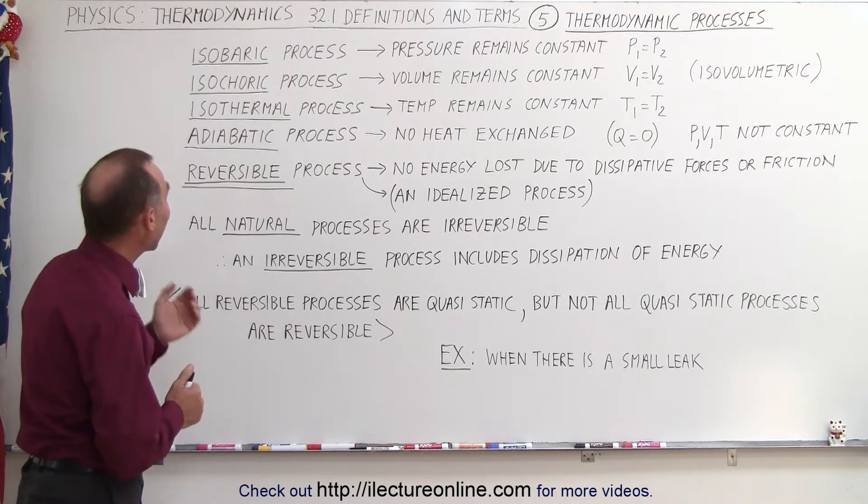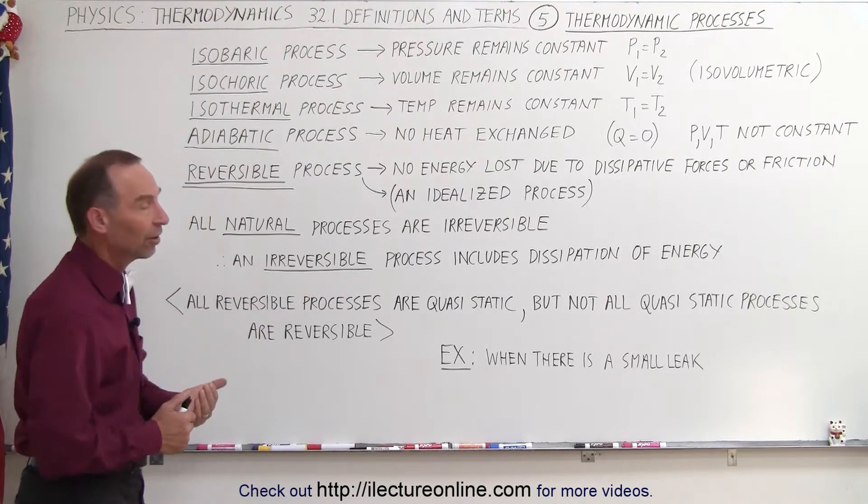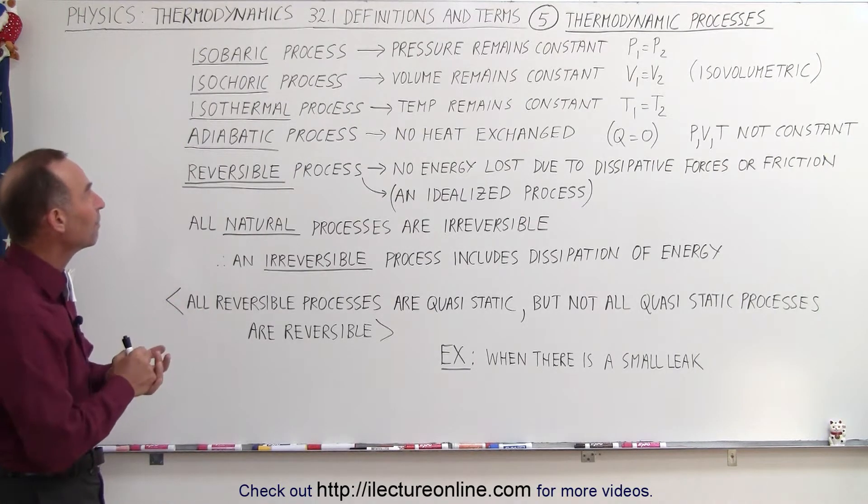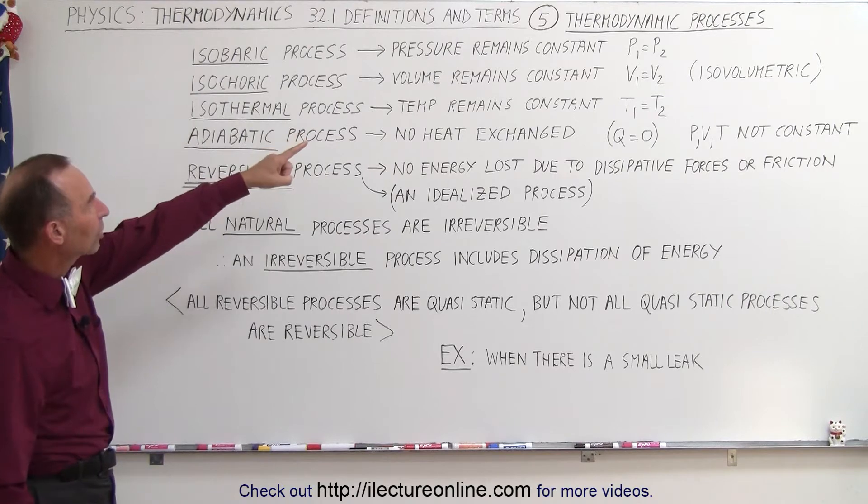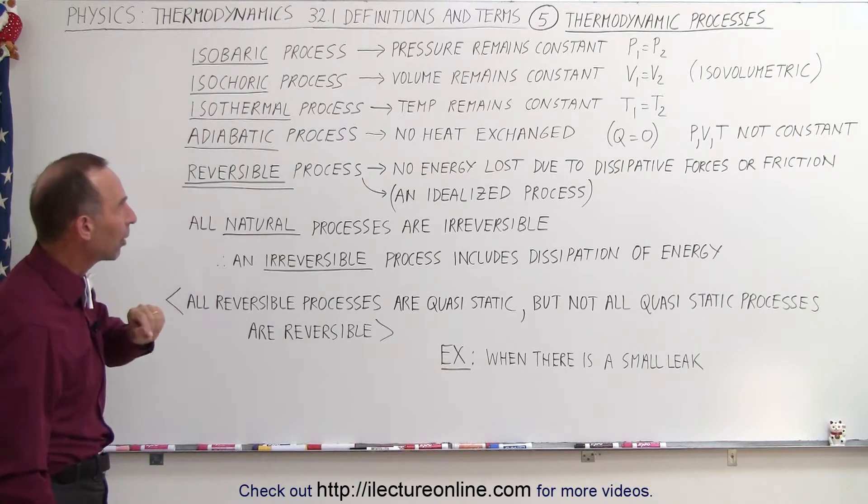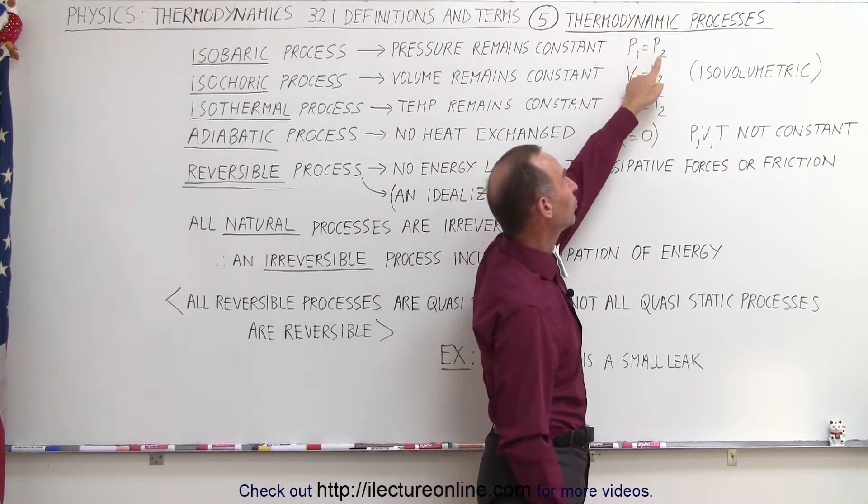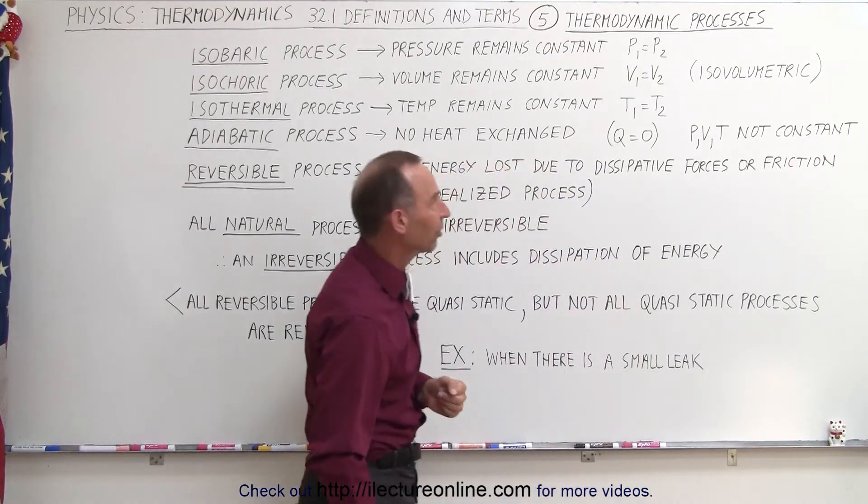For example, we have what we call the isobaric process. Now baric means pressure and iso means one or the same. So when the pressure remains constant we call it an isobaric process, which means that the pressure in state one or the initial state equals the pressure in state two or the final state.